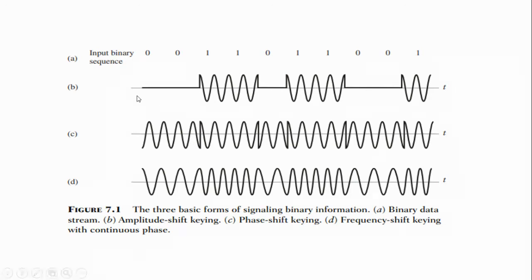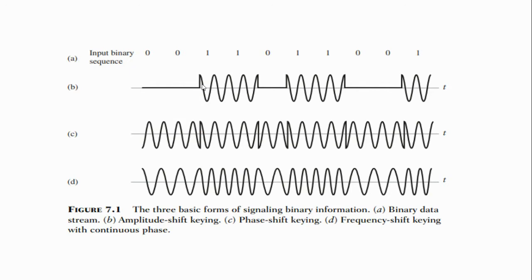In amplitude shift keying, when symbol 0 is transmitted, no pulse is transmitted — there is no carrier signal transmitted when 0 is sent. When symbol 1 is transmitted, a high frequency sinusoidal carrier is transmitted. The amplitude of the sinusoidal carrier signal is varied according to the amplitude of the binary data. This is also called on-off keying.